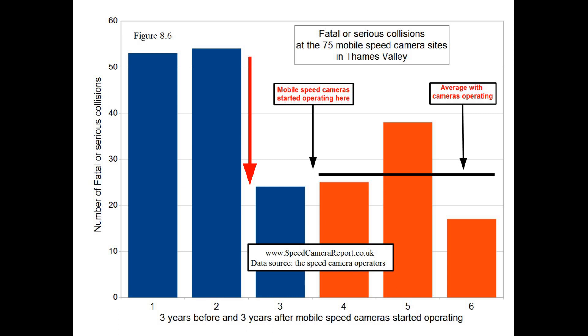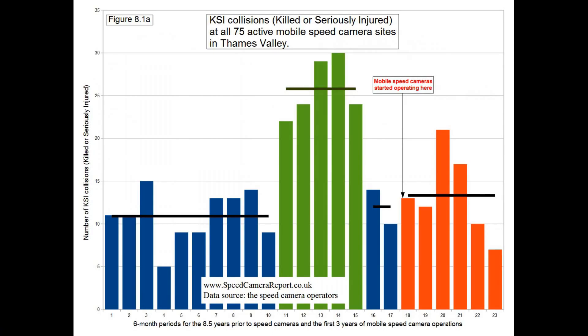But why did that reduction occur? To find that out, we need to go further back in time. So here are the same camera sites again, except this time the collisions go back eight and a half years, and they are shown every six months.